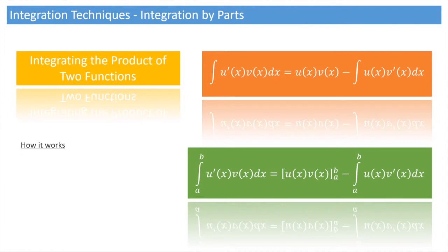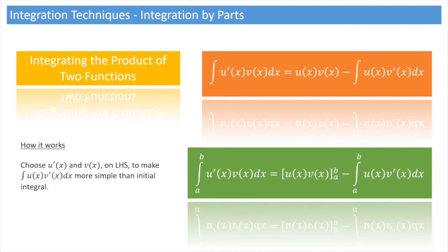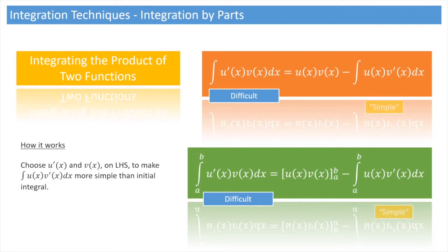So how does this work? The idea, focusing on the left-hand side of the formula, is to choose u'(x) and v(x) such that the integral on the right-hand side — the integral of u(x) times v'(x) — is simpler to integrate. In other words, we may be faced with an integral which is a product of two functions that's difficult to integrate, so we want to break it up and write it as u'(x) times v(x) so that the right-hand side integral is simpler.